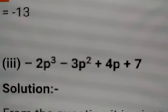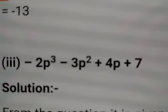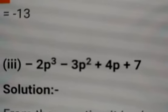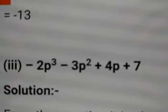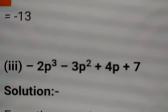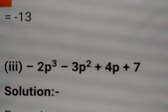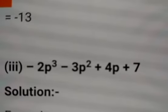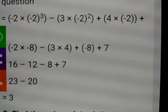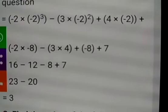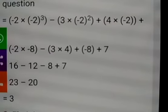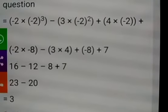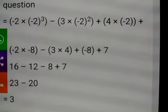Now the third question: if p is equal to minus 2, find the value of the given equation — that is minus 2p cubed minus 3p squared plus 4p plus 7. We have to substitute the value of p in the given expression. What is the value of p? That is minus 2.